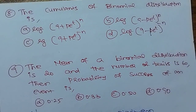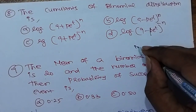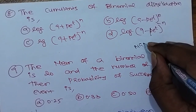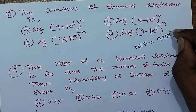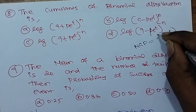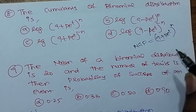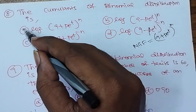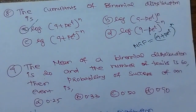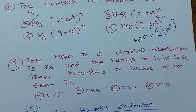The MGF of the binomial distribution — the moment generating function — is (q + pe^t)^n. Option A is the correct answer.